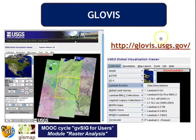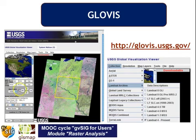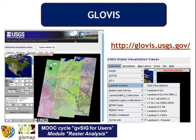Another website is Glovis. You can select images by zooming in on the interface. You can set the time period and also set the maximum cloud cover allowed, because if there is a high density of cloud, you will not be able to see the useful information in the data.